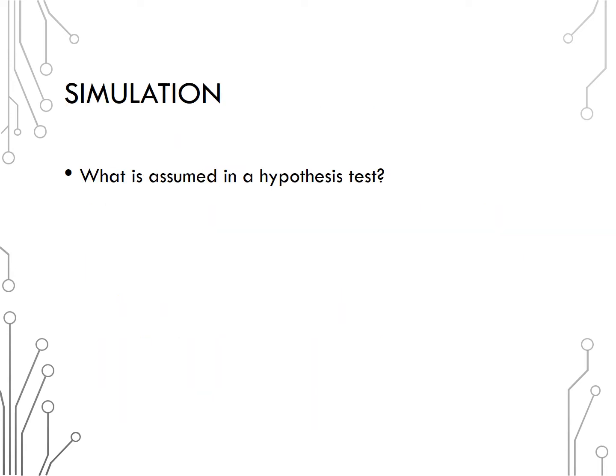In any hypothesis test what do we assume? We assume the null is true, in this case that there is no association between our variables. What does no association mean? It means both groups have the same conditional proportion of successes. Think back to section 5.1 intro PowerPoint. How did we create a table representing no association?